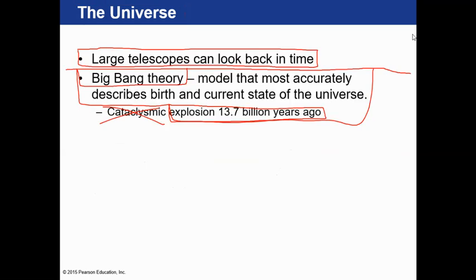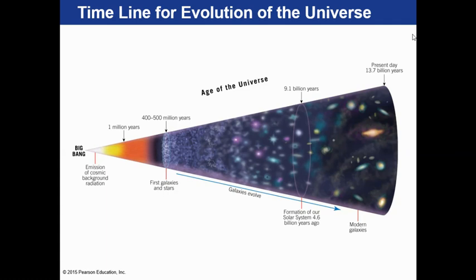Large telescopes can actually look back in time. Because the universe is so big, it takes so long for light from other galaxies to get here. A galaxy that is a billion light years away—if we look at it with a telescope, we're seeing it a billion years in the past, because it took a billion years for light to get here. We'll also talk about the Big Bang theory: the concept that space, matter, time, and energy all began from a single point about 14 billion years ago, and that the universe has been expanding ever since.